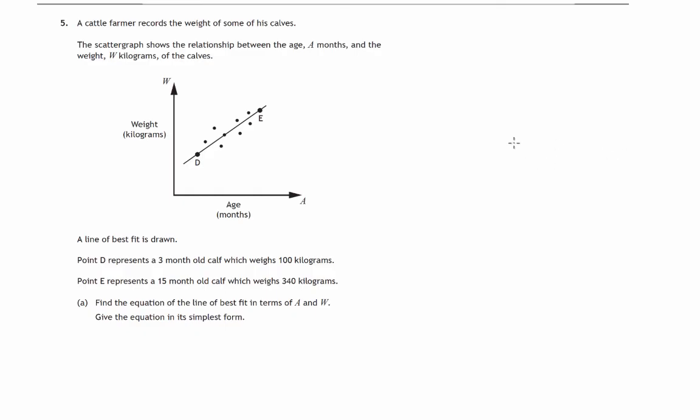So in this question we're given a scatter graph. This records information about a cattle farmer's calves. Each dot gives you the age and the weight of one of his calves.